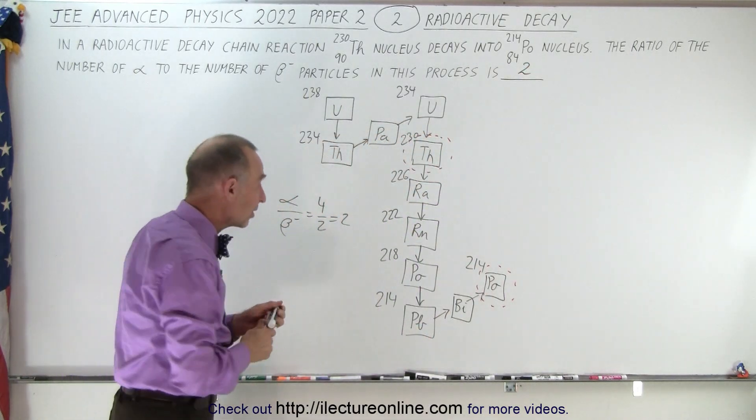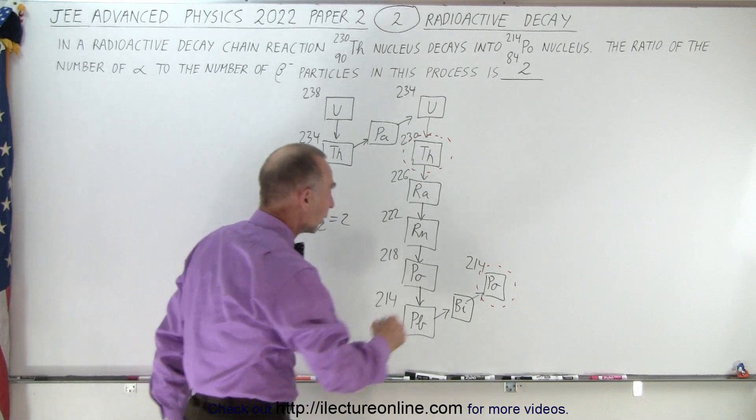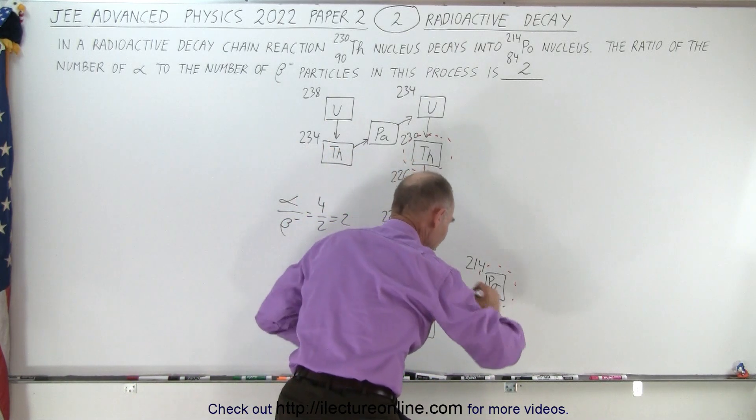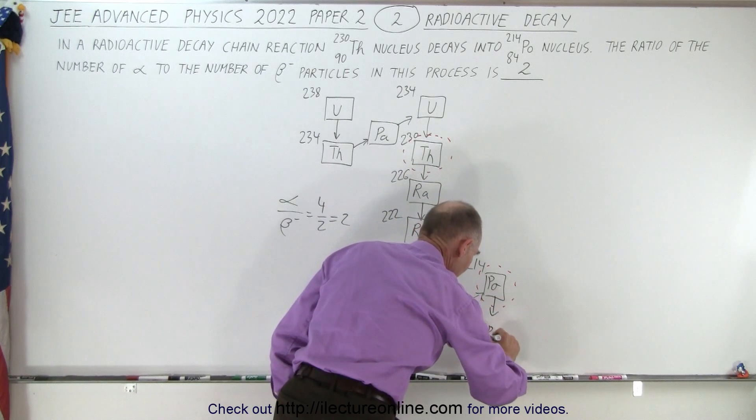If you want to see the rest of the decay process, then here we have another alpha decay to lead. Now this is lead-210, which is still not the end product.